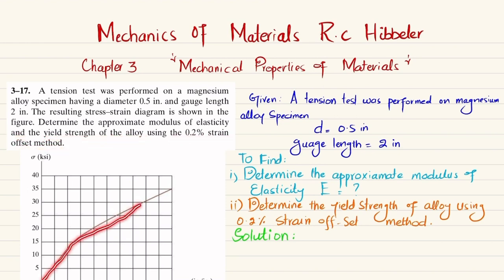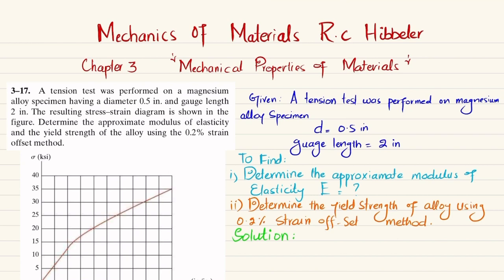This is the stress-strain diagram for the magnesium alloy. The initial diameter was 0.5 inch and the gauge length is 2 inch — the length over which we perform this tensile test. From this stress-strain diagram we need to find the modulus of elasticity and, using the 0.2 percent strain offset method, determine the yield strength.